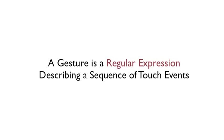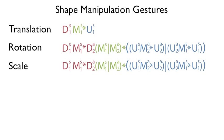A multi-touch gesture is a regular expression that describes the sequence of touch events. For example, these regular expressions describe a shape translation gesture performed with one touch, a rotation gesture performed with two touches, and a scale gesture also performed with two touches.